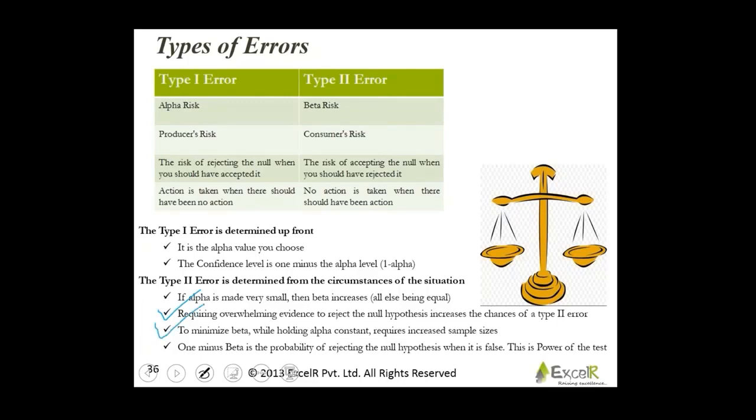To minimize the beta while holding alpha constant requires you to increase the sample size. The amount of data that you have has to increase significantly. 1 minus alpha is called as confidence level and 1 minus beta is called as power of test. It is a probability of rejecting the null hypothesis when it was false. That is a good case basically.